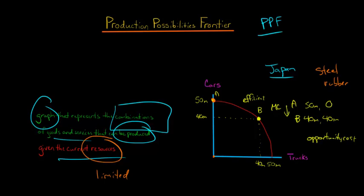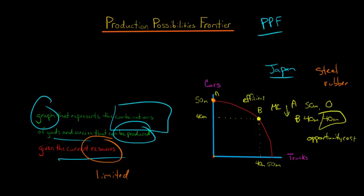At point B, for example, they have 40 million cars and 40 million trucks. They could not produce 41 million cars and 40 million trucks — if they wanted to go to 41 million cars, they would have to decrease their truck production. When we say it's efficient in production, we mean you couldn't produce more of one without sacrificing the other. At point A, Japan cannot produce an additional car beyond 50 million.